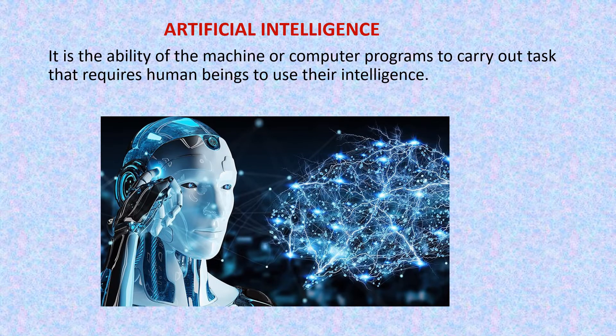So first let's revise what is artificial intelligence. Artificial intelligence is the ability of the machine or computer programs to carry out tasks that requires human beings to use their intelligence. We are making machines artificially intelligent so that they can behave like humans, think like humans, apply the knowledge like humans and take decisions like humans.